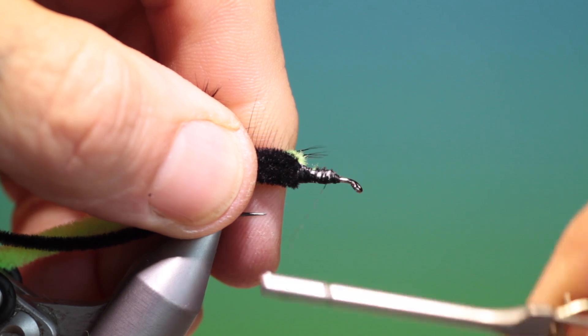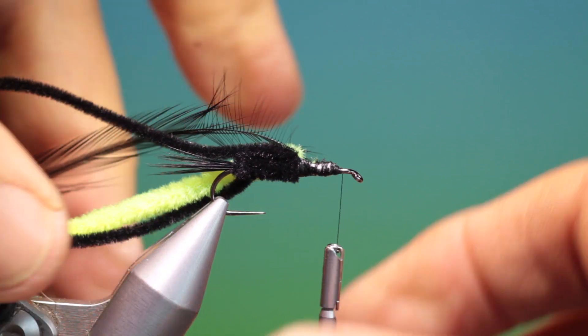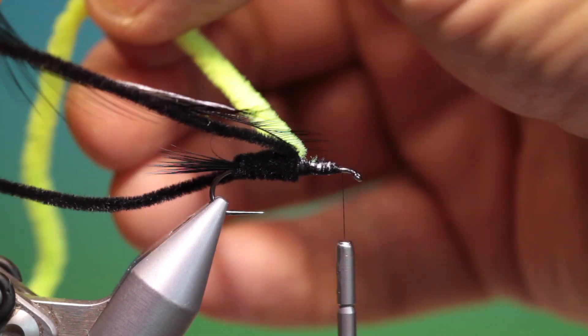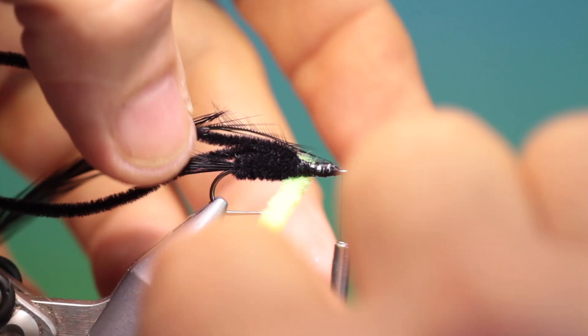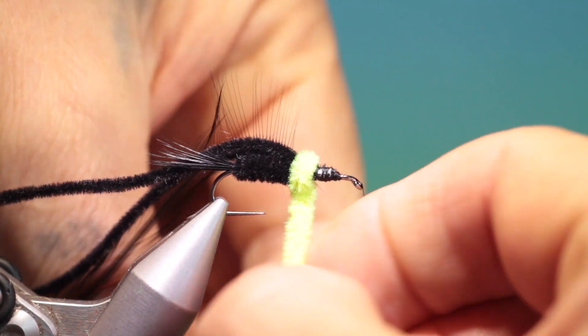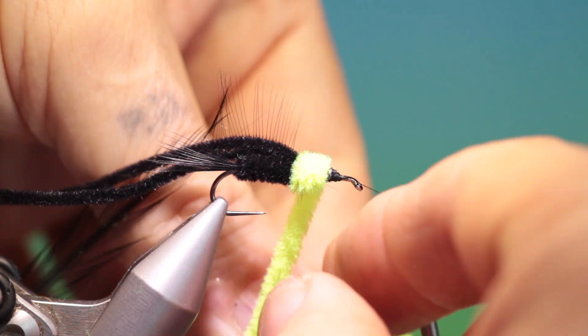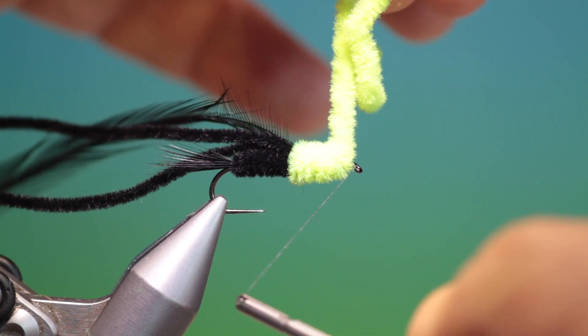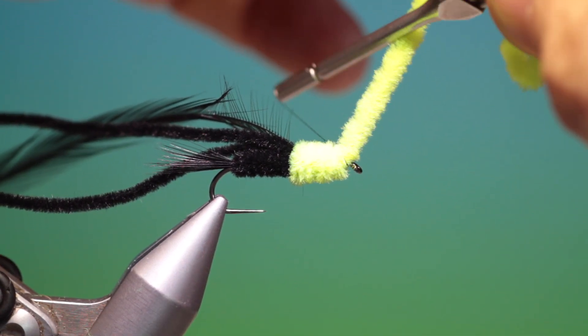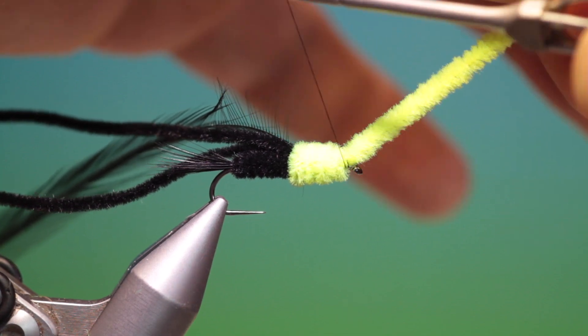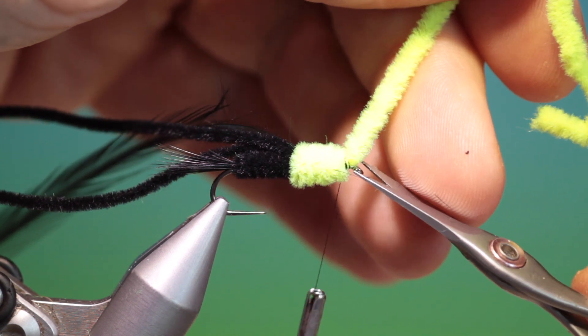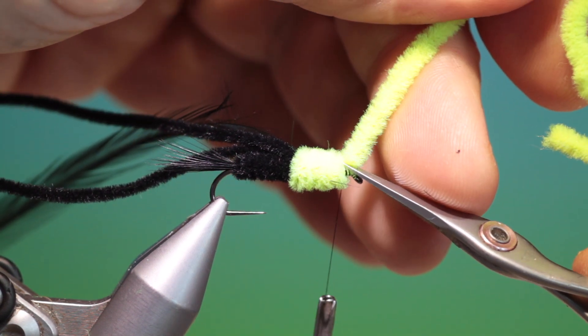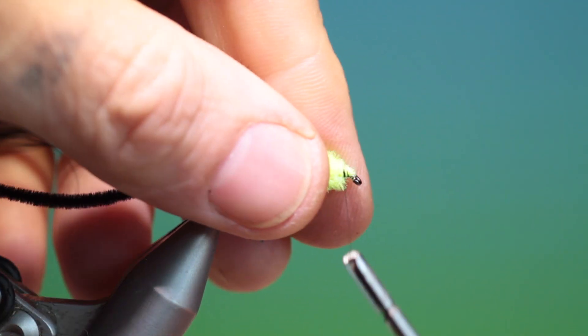So I'll just go over that. Stop there. Then we take our green chenille and what we want to do here is make a few wraps for the thorax. It's beautiful. And then we'll come in here, tie that off like so. And then come tie it in careful not to cut your tying thread. Trim that off.